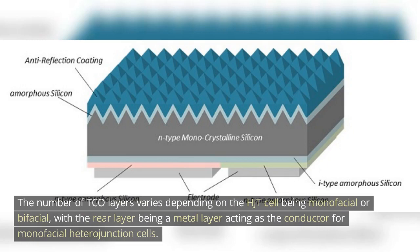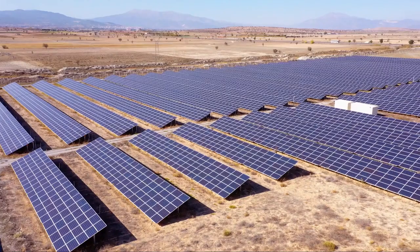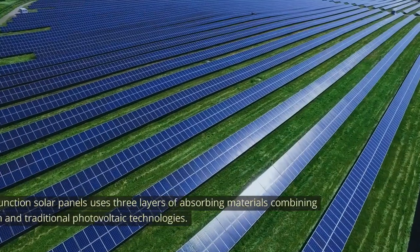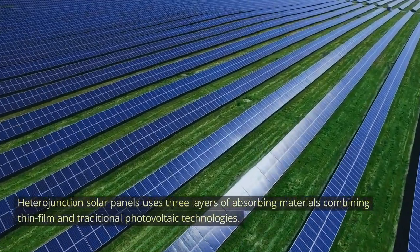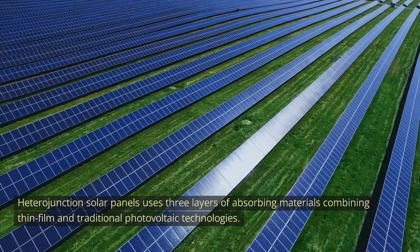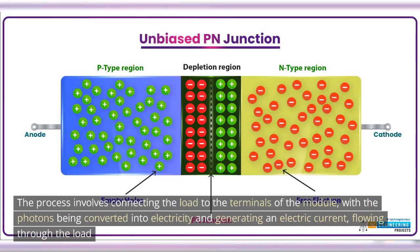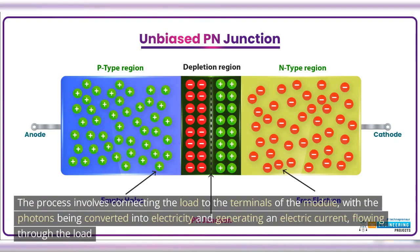How do heterojunction solar panels work? Heterojunction solar panels use three layers of absorbing materials combining thin film and traditional photovoltaic technologies. The process involves connecting the load to the terminals of the module, with the photons being converted into electricity and generating an electric current flowing through the load.